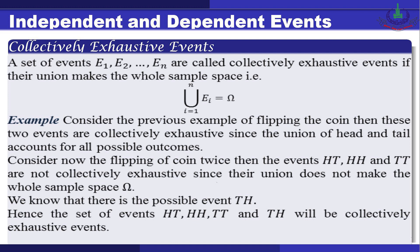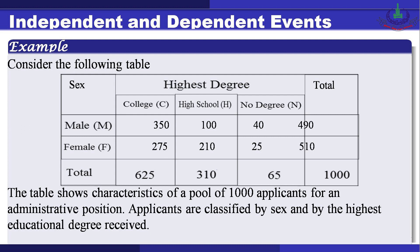A set of events E1, E2, ..., En are called collectively exhaustive if their union makes the whole sample space omega, written as: union from i=1 to n of E_i equals omega. For example, flipping a coin once gives head and tail, which are collectively exhaustive since their union accounts for all possible outcomes. However, when flipping a coin twice, the events {head-tail, head-head, tail-tail} are not collectively exhaustive since tail-head is missing.